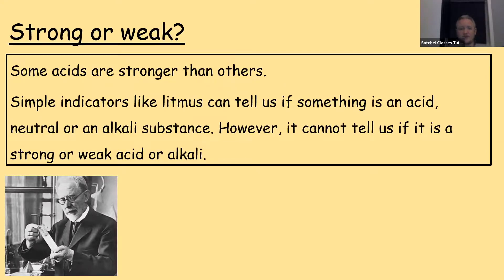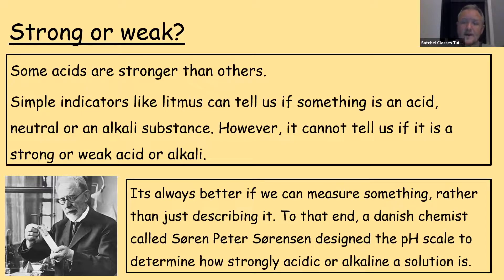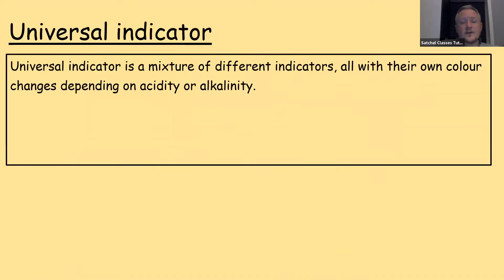This is quite an important piece of information if you're a chemist — for example, if you're looking at something that could be vinegar or could be battery acid and you don't want to find out by tasting it. It's always better if we can measure something rather than just describe it. A Danish chemist called Søren Peter Sørensen designed the pH scale to determine how strongly acidic or alkaline a solution is. Universal indicator is something that allows us to measure pH using the scale that Sørensen set up.